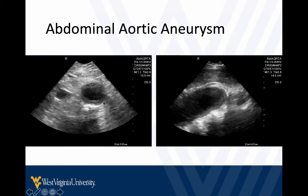Here we see the spine with shadowing, and here's the abdominal aortic aneurysm. Notice we see some thrombus within here, but when we measure, we measure all the way out to the walls past the thrombus — we don't measure inside where the thrombus is. And here's just a longitudinal view. We see the spine behind it. These are abdominal aortic aneurysms.